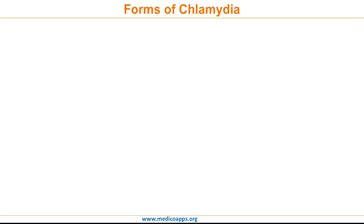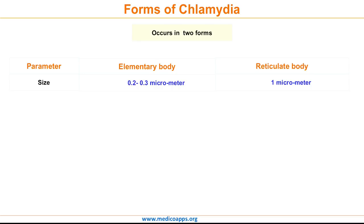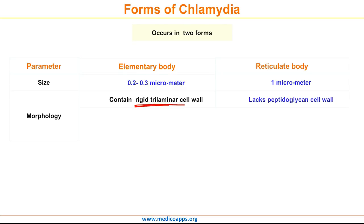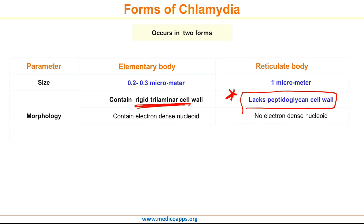Now let's look in detail at the differences between the two forms of Chlamydia. Comparing size, the elementary body is smaller — about 0.2 to 0.3 micrometers — whereas the reticulate body is about 1 micrometer in size. Regarding morphology, while the elementary body contains a rigid tri-laminar cell wall which protects it from intracellular destruction, the reticulate body lacks the peptidoglycan cell wall. Also, the elementary body contains an electron-dense nucleoid, whereas it is absent in the reticulate body.